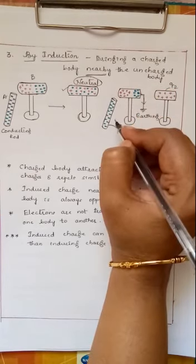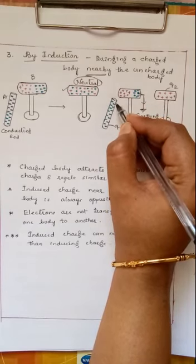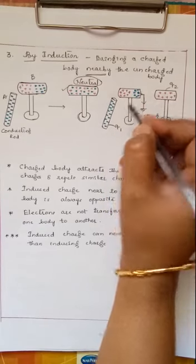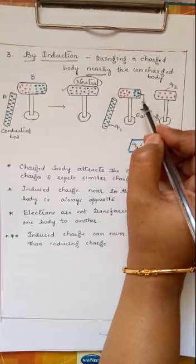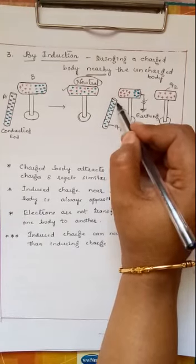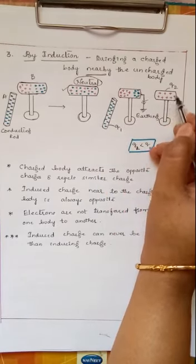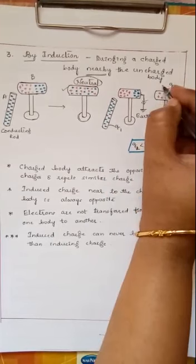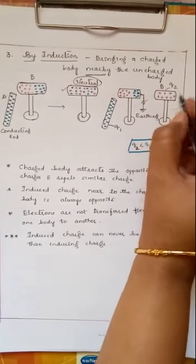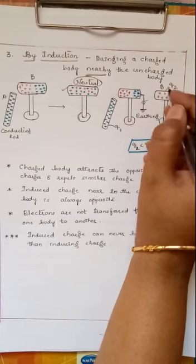Then we are going to see that all these electrons will flow, so these electrons will flow to the earth, so leaving only the positive charges bound nearby the rod. So now if I disconnect this earthing wire as well as if I take the rod away, I can see that this complete conductor, that is conductor B, becomes completely positively charged.